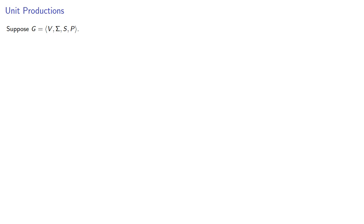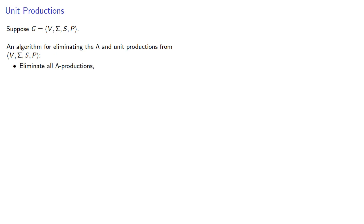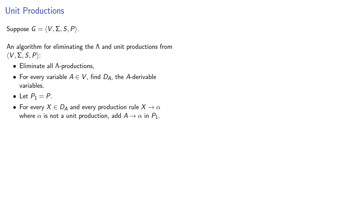Suppose G is a context-free grammar. An algorithm for eliminating the lambda and unit productions from this grammar is: begin by eliminating all lambda productions. For every variable, find the A-derivable variables. Let our production rules start out as the original set of production rules. For every variable in the A-derivable variables and every production rule X produces something where something is not a unit production, we'll add the rule A produces that something, and then eliminate all unit productions from our production rules.